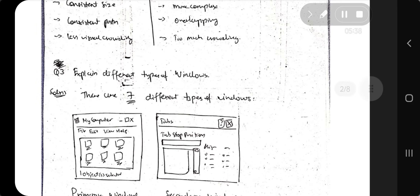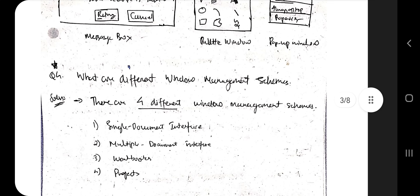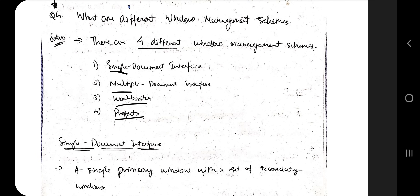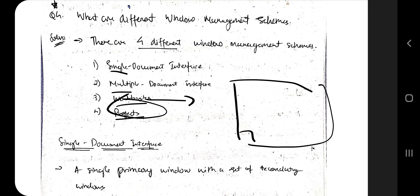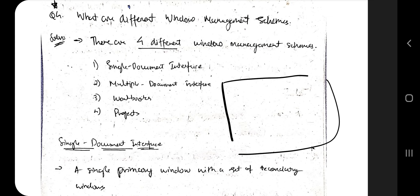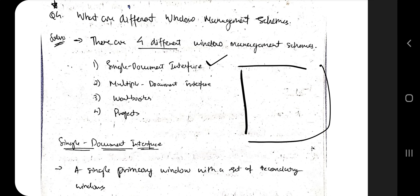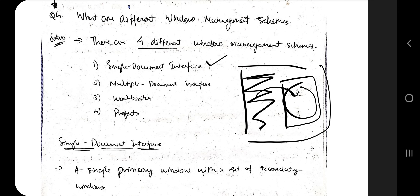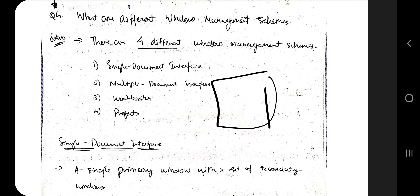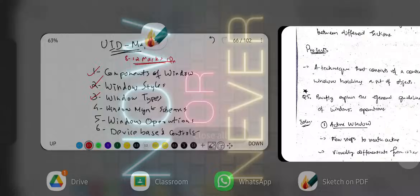Next are the window management schemes — there are four types: single document interface, multiple document interface, workbook, and project. Workbook is like Excel, where you have a workbook with different sheets containing rows, columns, and values. Project is like Android Studio, where you have many projects and you click whichever one you want to work on. Single document interface has just one window where everything is present inside. Multiple document interface means multiple independent documents are visible on the same screen and you can work on them simultaneously.